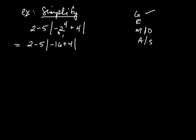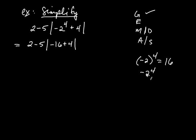Now, this is not negative 2 raised to the 4th — negative 2 raised to the 4th would look like that with a negative in the parentheses, and that equals 16. This is different: it's 2 to the 4th, which is 16, and then multiplied by negative 1. If there are parentheses including the negative as part of the base, you multiply the negative number by itself that number of times. If there are not parentheses, the negative is not part of the base.